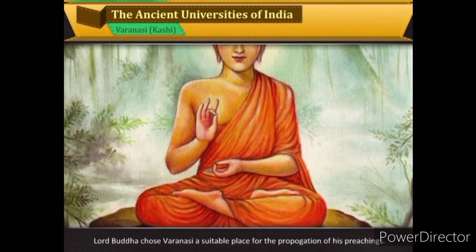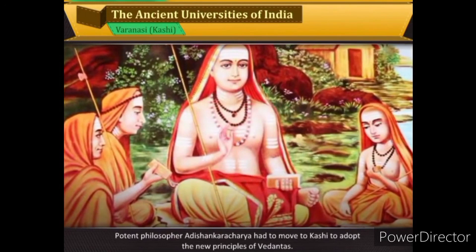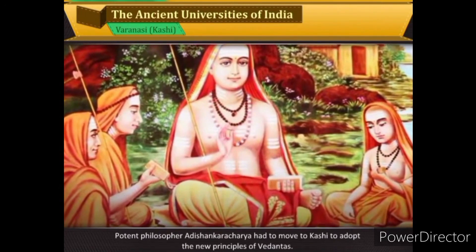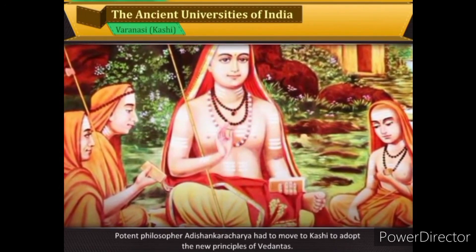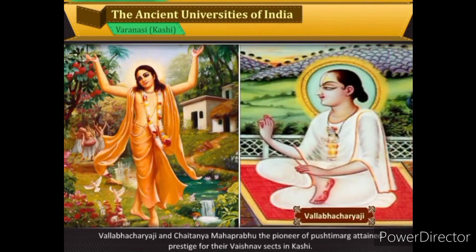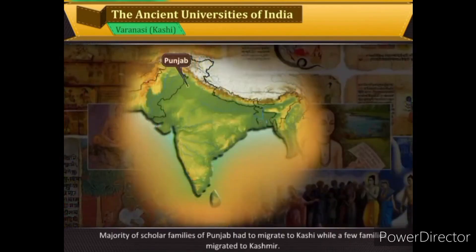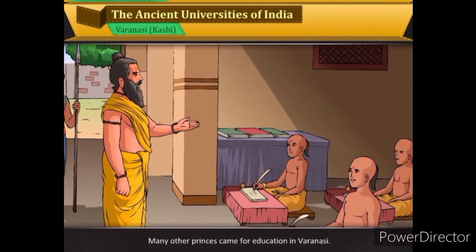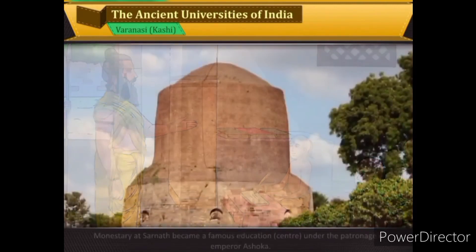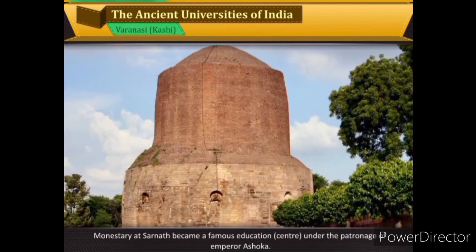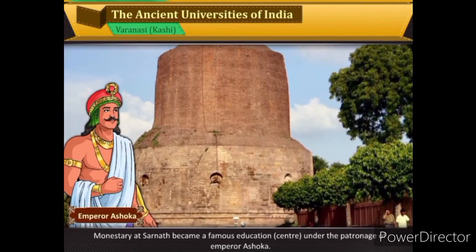It is mentioned in Vyas Samhita that Maharishi Vedvyas had his ashram in Varanasi. Lord Buddha chose Varanasi as a suitable place for the propagation of his teachings. The great philosopher Adi Shankaracharya moved to Kashi to adopt the new principles of Vedanta. Vallabhacharya and Chaitanya Mahaprabhu also attained prestige for their Vaishnava sects in Kashi. Princes came for education in Varanasi, and the monastery at Sarnath became a famous education center under Emperor Ashoka.